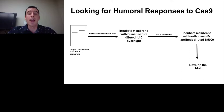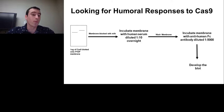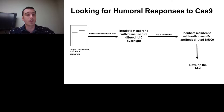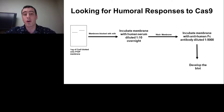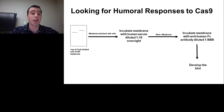To look for humoral responses to Cas9, we first used an immunoblot approach. We blotted one microgram of either Cas9 homolog onto a PVDF membrane, blocked with milk, then incubated with human serum diluted 1-to-10 overnight — the serum serving as a primary antibody against Cas9. We then incubated with anti-human IgG antibody conjugated to horseradish peroxidase at 1-to-5000 dilution and developed the blot. A clear band for Cas9 would indicate the presence of anti-Cas9 antibodies in the serum.